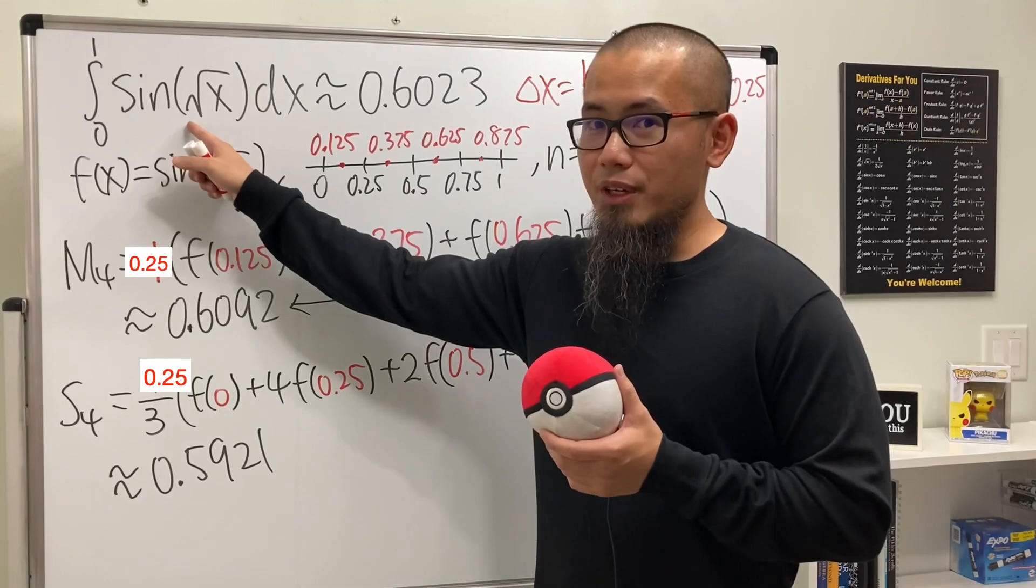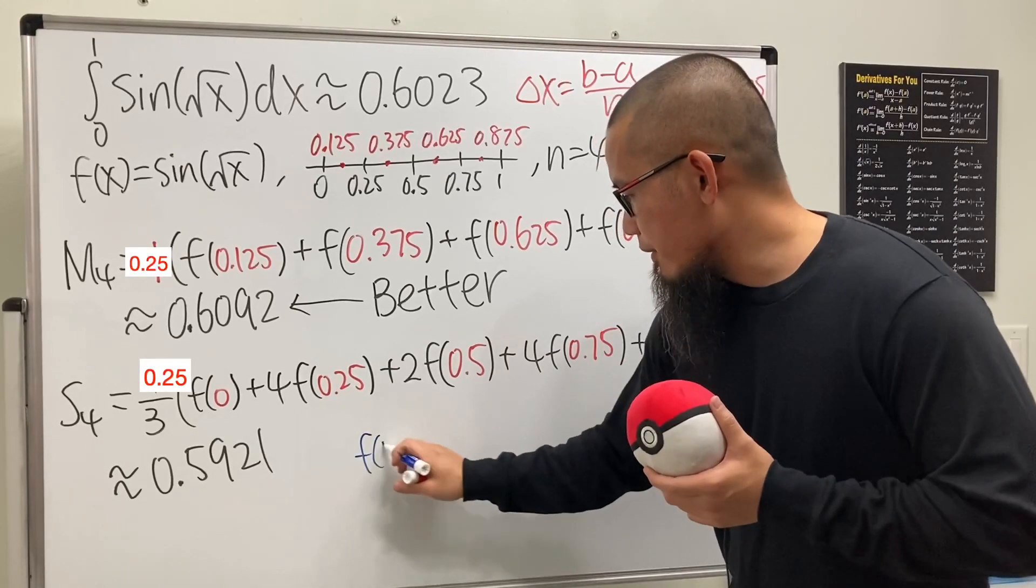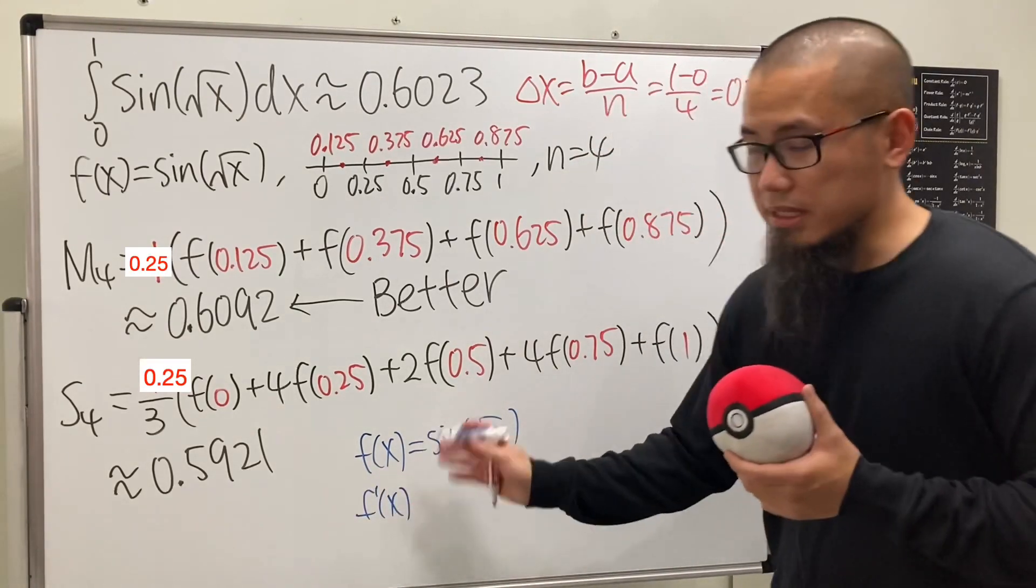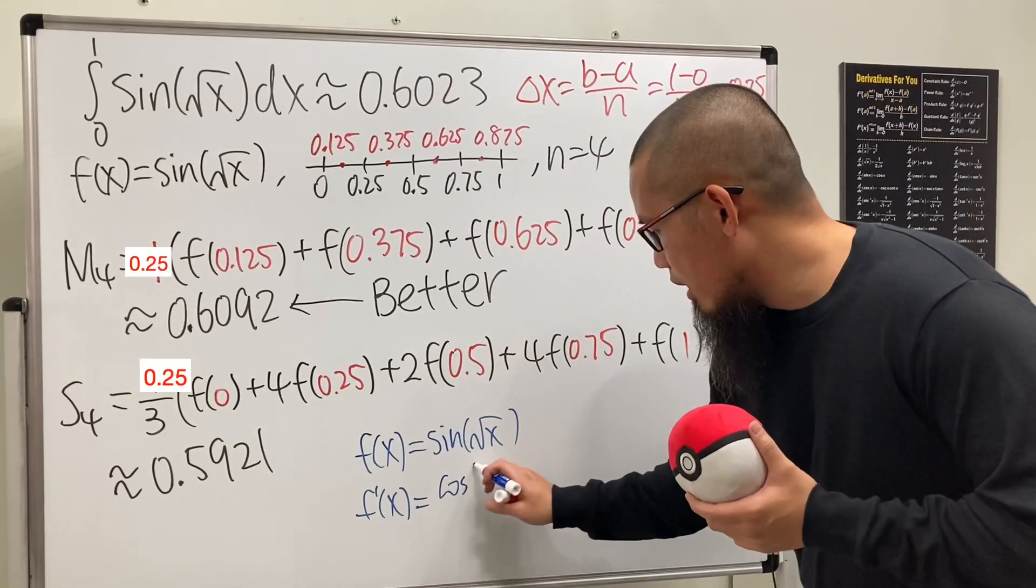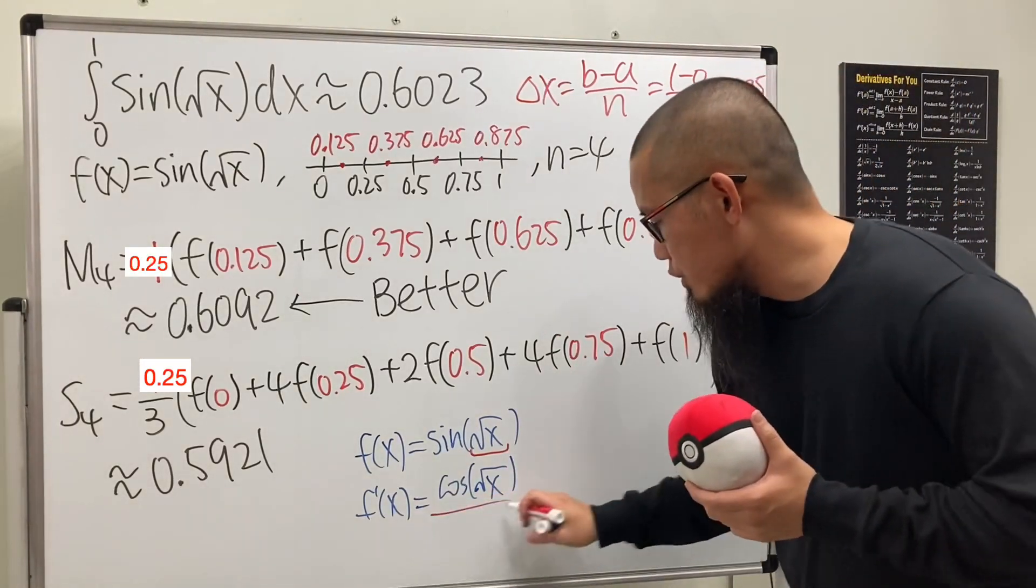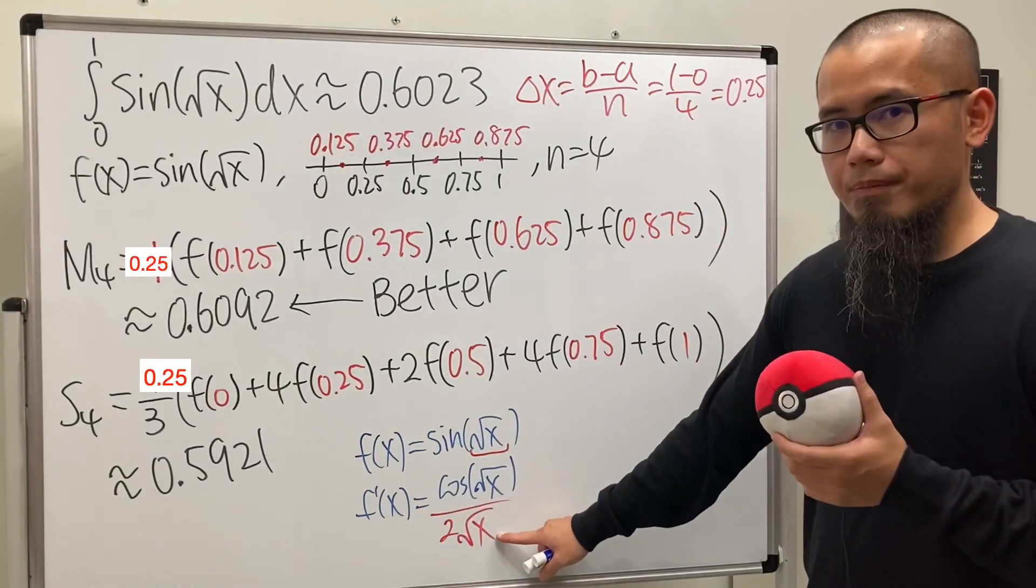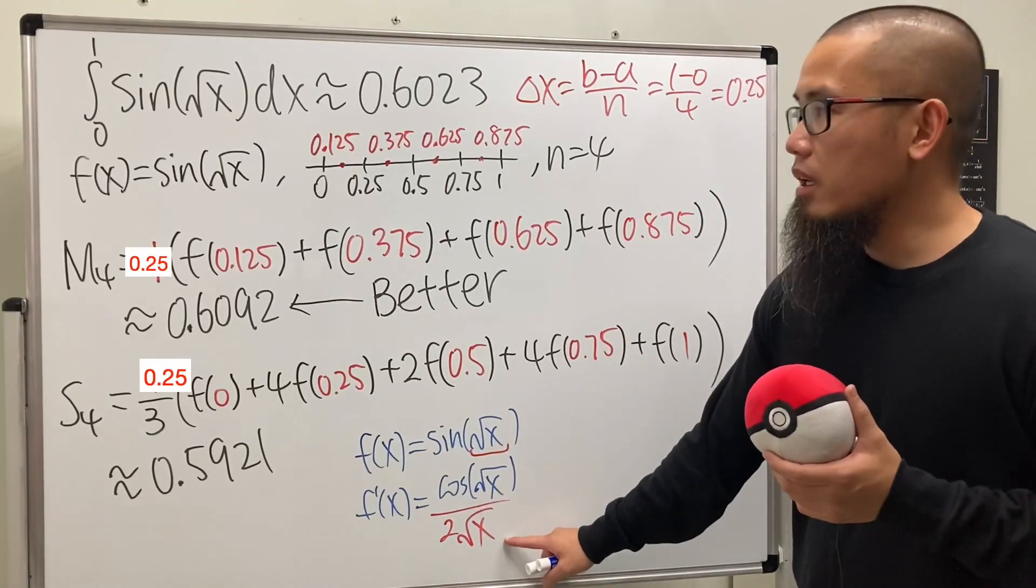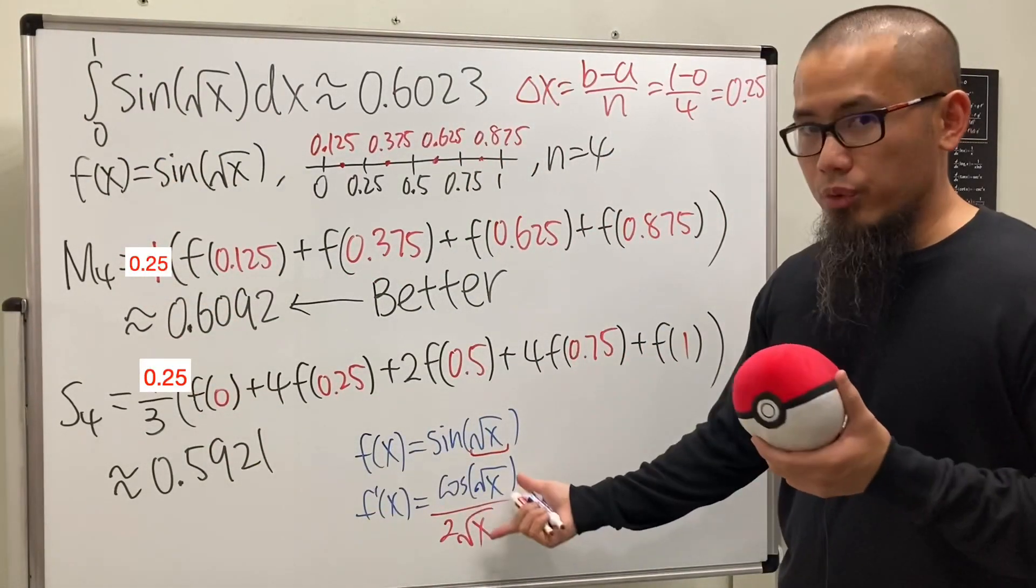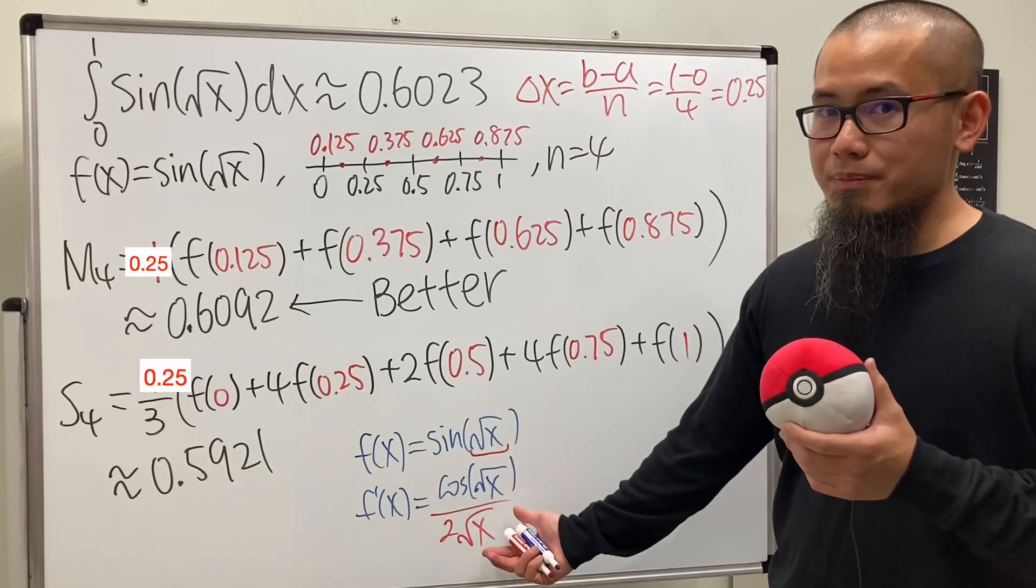But just like the previous video, you see this. If you differentiate, let's talk about the derivative. f of x is sine of square root of x. When we differentiate, we get cosine of square root of x, but using the chain rule, multiply by the derivative inside, which is 1 over 2 square root of x. The first derivative has square root of x on the bottom, and the interval goes from 0 to 1. If you put 0 in here, the first derivative doesn't exist.